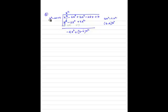Next, minus 4x cubed divided by x squared gives minus 4x. Multiplying minus 4x by (x squared minus 2x plus k): minus 4x times minus 2x gives plus 8x squared, and minus 4x times k gives minus 4kx. Bringing down minus 25x plus 10.